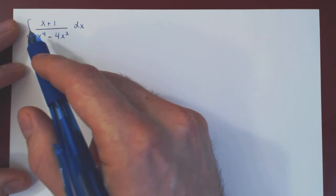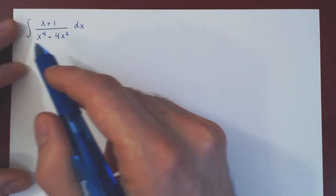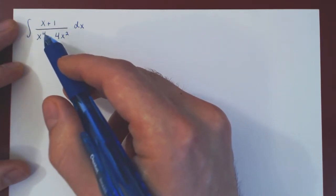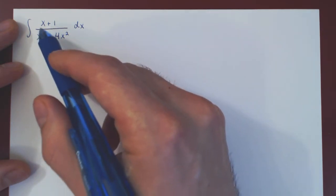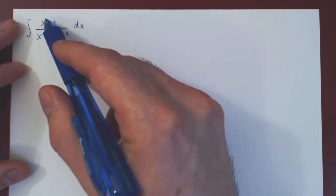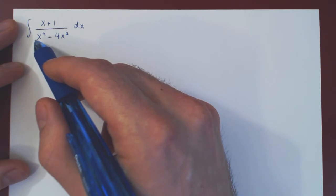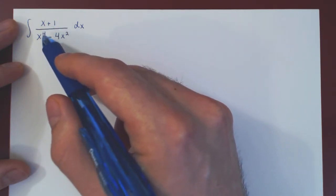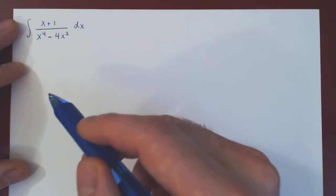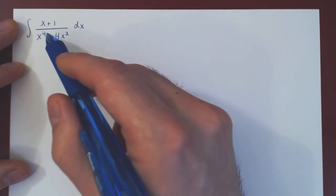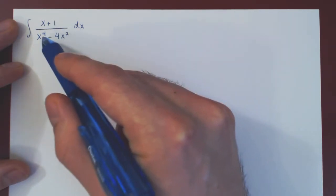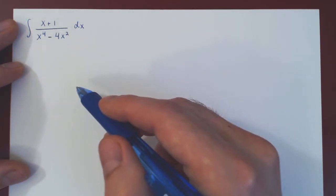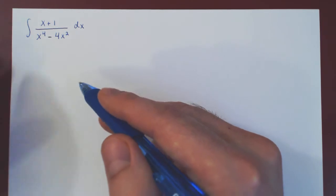In this video, we will find the integral of a rational function using the method of partial fractions. Since the degree of the numerator is 1 and the degree of the denominator is 4, and 1 is strictly less than 4, we do not have to perform long division. We can right away go to factoring the denominator and decomposing our rational function as a sum of partial fractions.